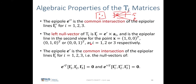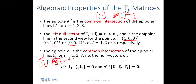Similarly, the epipole in the second view is the common intersection of the three epipolar lines found from Ti. Three points in the first view transfer to three epipolar lines in the second view, and their intersection gives the epipole e'. This common intersection is found as the left null space of the three epipolar lines in the second view concatenated together to form a matrix.